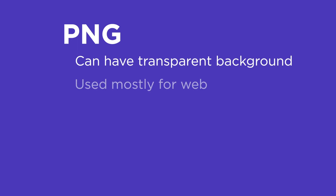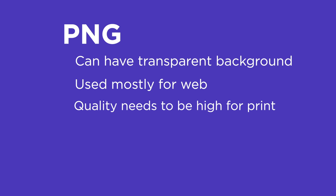PNG files are very similar to JPEGs, but they can have a transparent background. They're mostly used on the web, but you can use them for print in some cases. For example, print-on-demand T-shirt sites require a transparent PNG. When making one, you need to make it pretty big to get the quality right — in Illustrator, make your artboard about 15 inches wide and export at about 700 PPI. That gives you a high-quality file that will look great on a T-shirt.